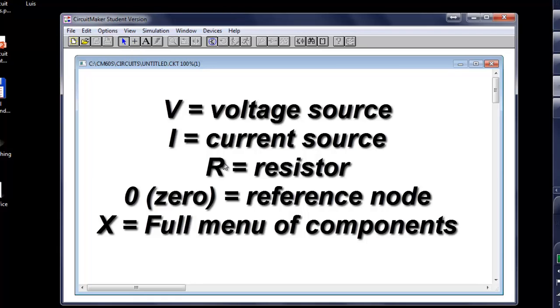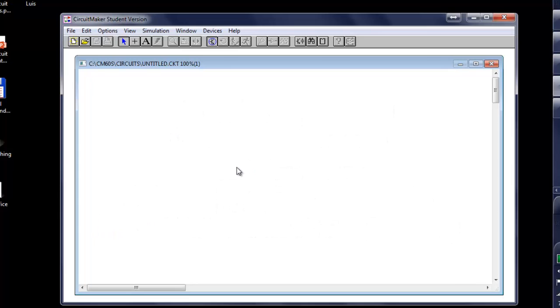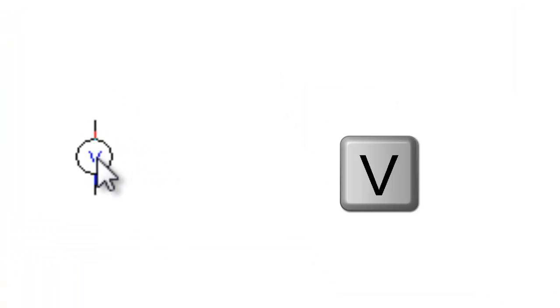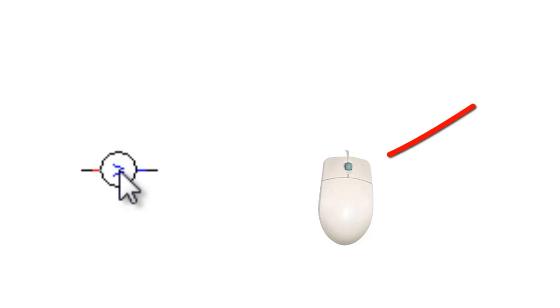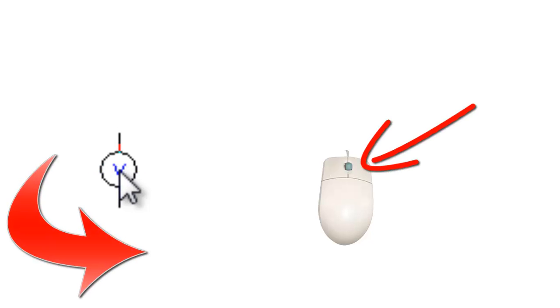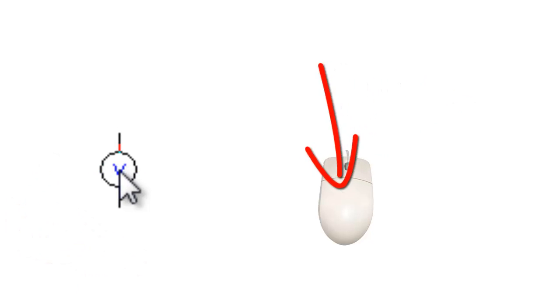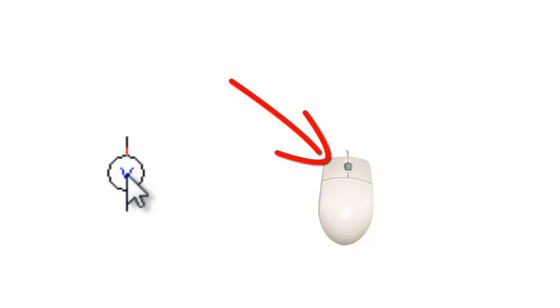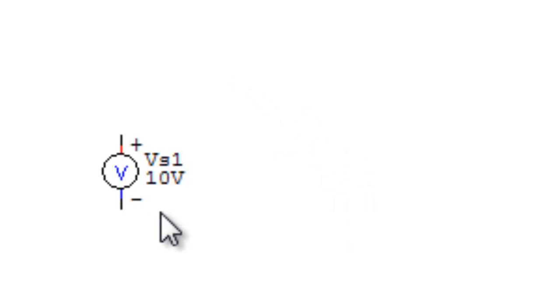Later, we'll explore the main menu of the software. Right now, bear with me. I click the V key and the voltage source appears. With the mouse, I move it and with the right button, I can rotate it counter-clockwise. And with the left button, I set it on the canvas. Click. There, we have our first component.